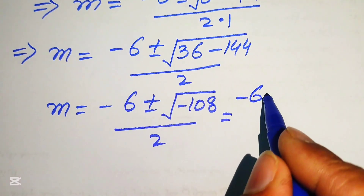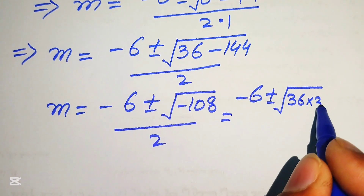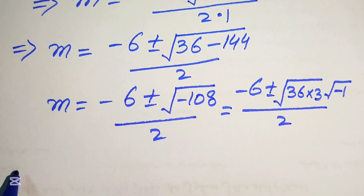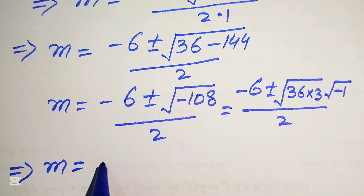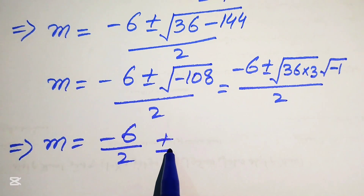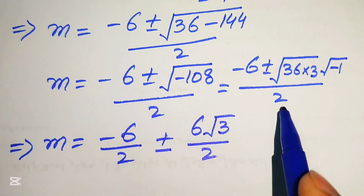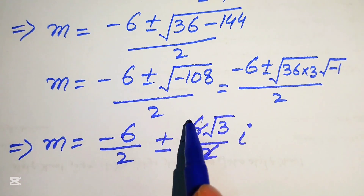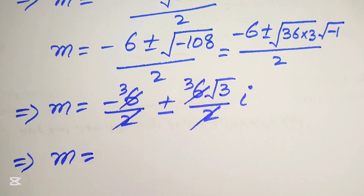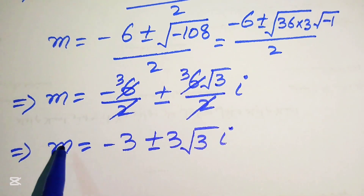We rewrite 108 as 36 times 3, separating the square root of minus 1, divided by 2. Breaking the fraction: minus 6 over 2, plus or minus the square root of 36 is 6, times square root of 3, divided by 2, times iota. Since 2 threes are 6, we get m equals minus 3 plus or minus 3 times square root of 3 iota.